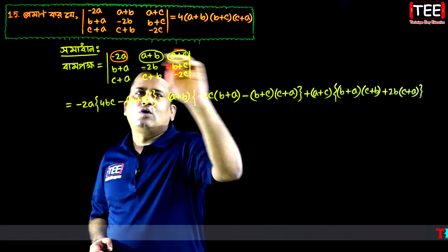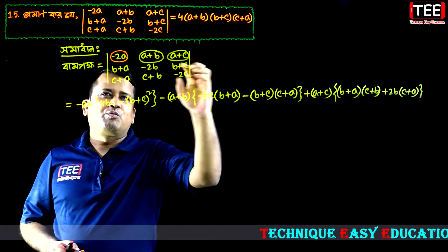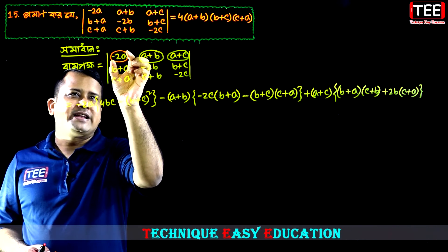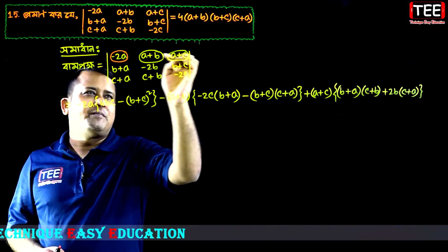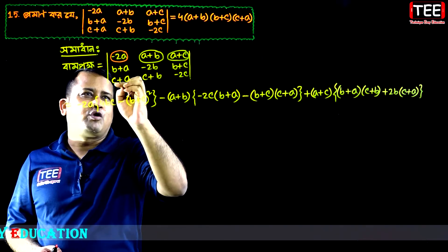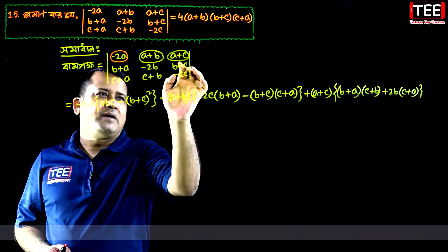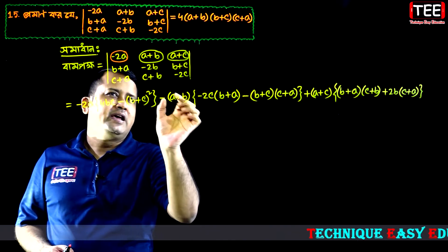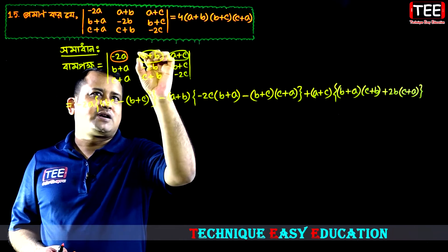Our first column multiplied by 20 is equal to minus 2a, so the first column times the first column is minus 2a. The 1 is equal to minus 1, which is equal to minus 2a.